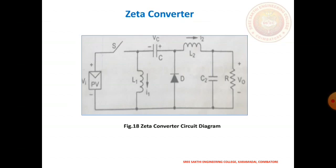L1 stores energy from the input supply voltage, and the inductor currents rise from minimum to maximum during this period. In the next case, when the switch turns off, the diode becomes forward biased and starts conducting. The energy stored in inductor L1 is transferred to the capacitor, and energy stored in inductor L2 is transferred to capacitor C_out and the load. The inductor current falls from maximum to minimum during this time. The voltage conversion ratio of the zeta converter is the same as that of the buck-boost, Cuk, and SEPIC converters.